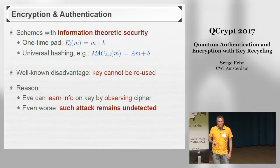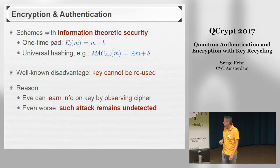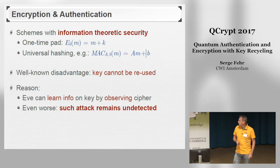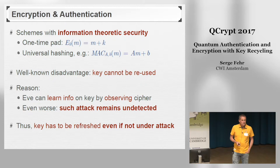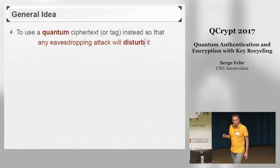If you keep reusing the key, Eve will accumulate more and more information on the key and will eventually know it — there's nothing we can do about that. What's even worse is that such a passive eavesdropping attack remains undetected. So even if we're not under attack, we cannot reuse the key even though it would be perfectly fine and perfectly secure, but we don't know that we were not under attack.